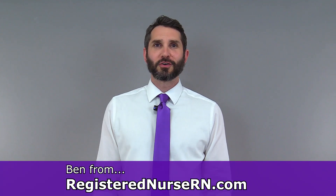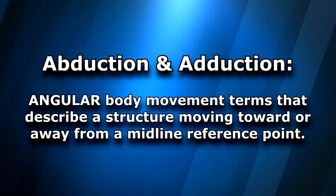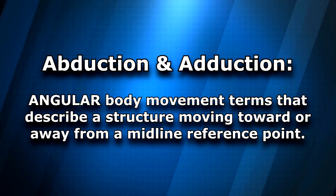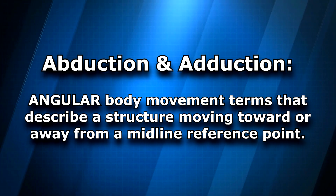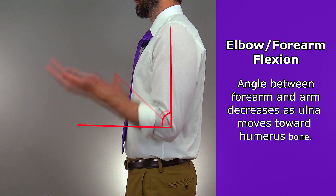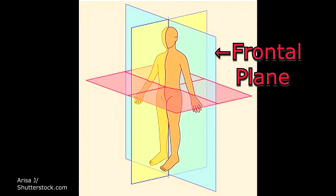Hey everyone, this is Ben with RegisteredNurseRN.com and in this anatomy lesson I'm going to demonstrate abduction and adduction, which are angular body movements that have a structure either moving toward or away from a midline reference point. Unlike flexion and extension body movements, which mostly take place within the sagittal plane or parallel to the sagittal plane, abduction and adduction movements are mostly going to take place within the frontal or coronal plane.